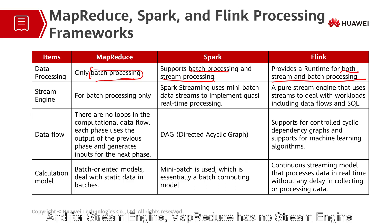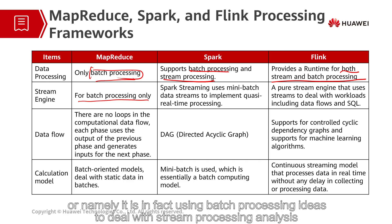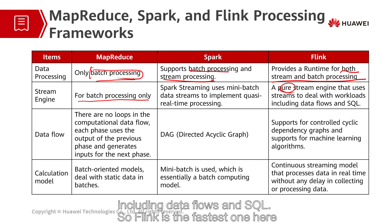For stream engine, MapReduce has no stream engine. Spark uses mini-batch data streams to implement near real-time batch processing and stream processing — namely, it is in fact using batch processing ideas to deal with stream processing analysis. But Flink is a pure stream processing engine that uses streams to handle workloads, including data flows and SQL.